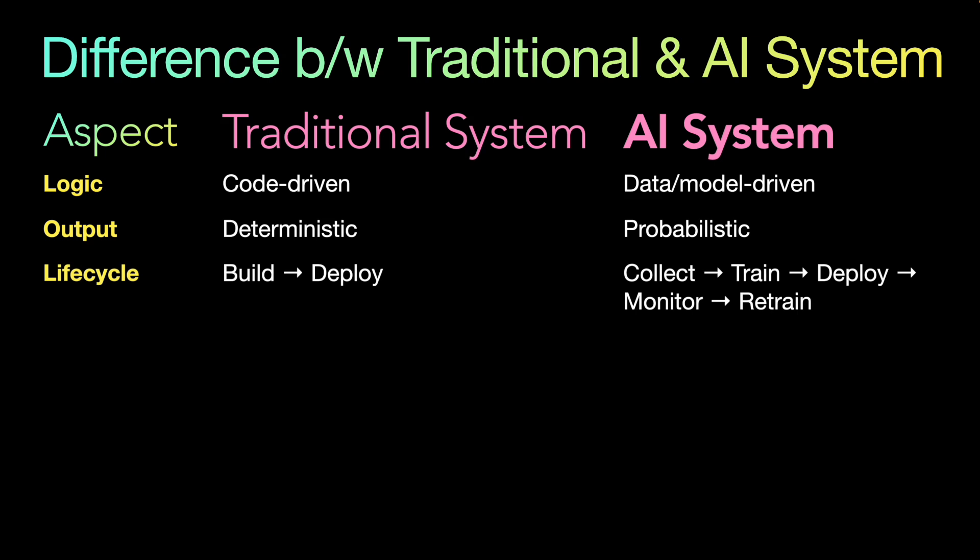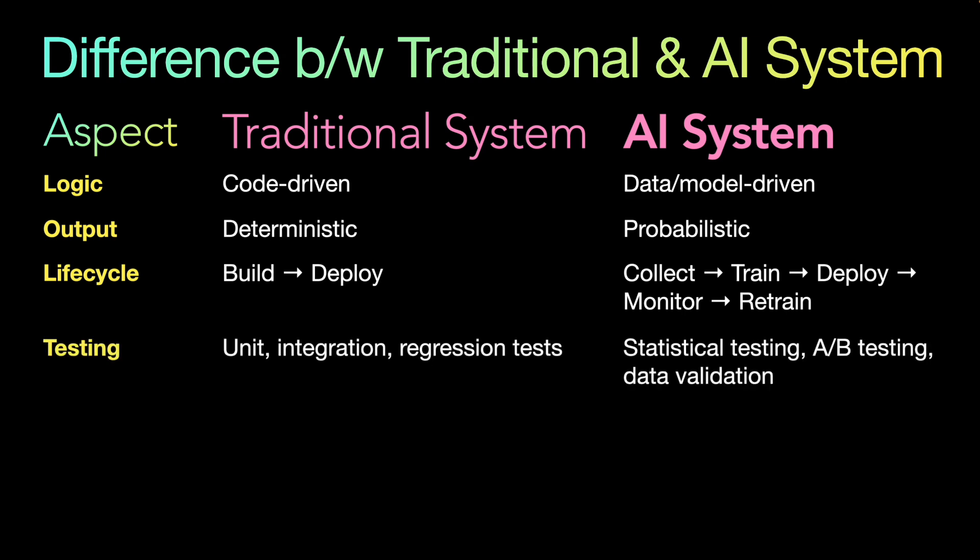The lifecycle is also very different. In a traditional system you basically build and deploy. But in AI systems you first collect data, then train the model, deploy it, monitor it, sanitize data, and then continue to retrain. Testing also differs — traditional systems use unit testing, integration testing, and regression testing, whereas AI systems rely more on statistical testing, A/B testing, and data validation, since a lot of the game is around data.